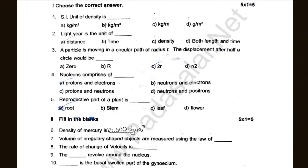Let's see the first one. The SI unit of density is the unit of distance. Fill in the blanks: The volume of irregularly shaped objects are measured using the method of displacement. The rate of change of velocity is acceleration. Electrons revolve around the nucleus. The basal swallowing part of the geosium.